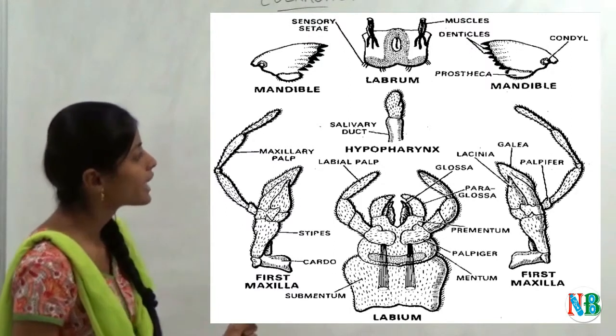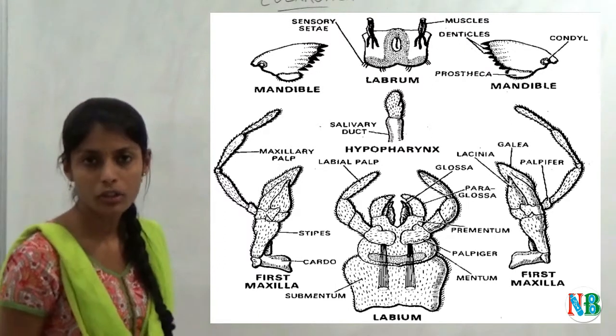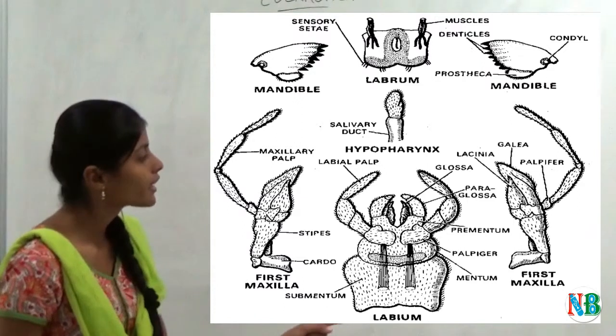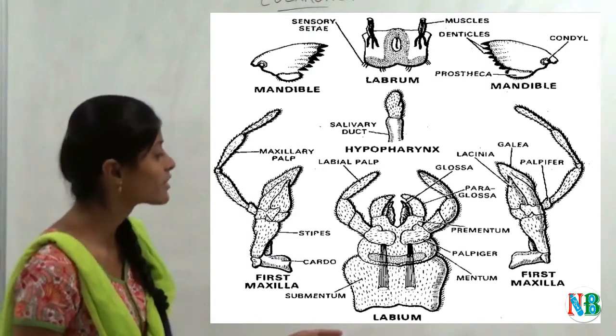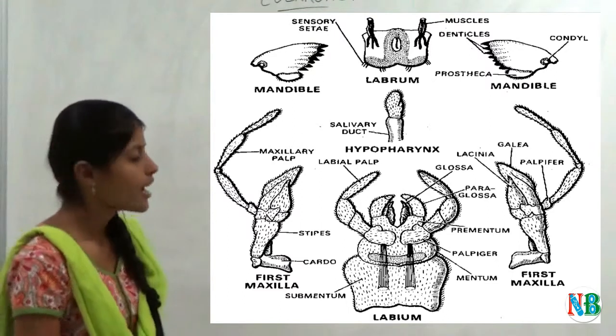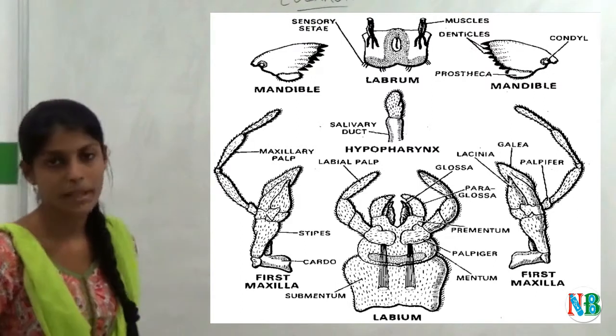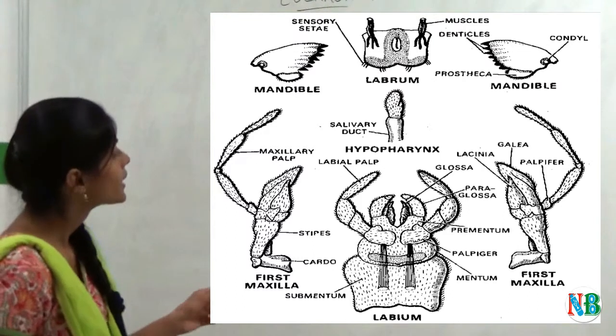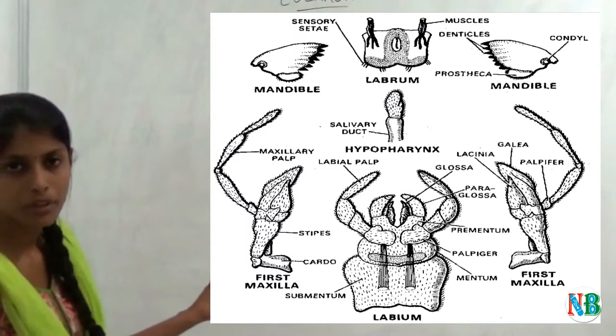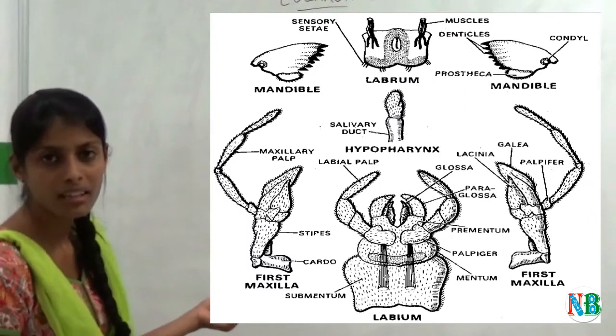In mandible, they contain thick appendages and pointed tooth. That helps in chewing and grinding. And they also contain smell senses. The next one is hypopharynx. They contain some taste receptors. And the appearance of hypopharynx also looks like a tongue. So it acts as a tongue in cockroach.